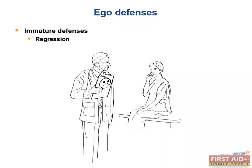Next is regression, which is exactly what it sounds like. Think about an adolescent who is under stress and begins wetting the bed, or an adult who reverts back to sucking their thumb. What's the difference between regression and fixation? Fixation is only partially remaining at an earlier stage of development, whereas in regression a person completely reverts to an earlier stage. On the USMLE, some answer choices will be similar to each other, like regression and fixation, so you have to know this difference.